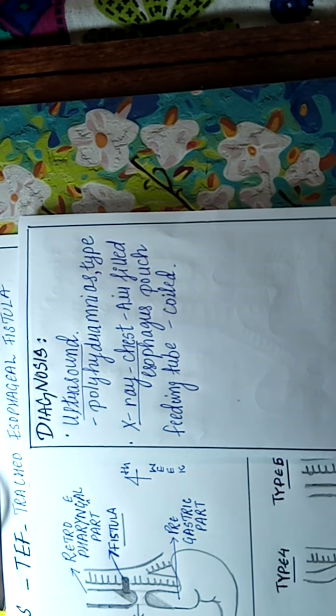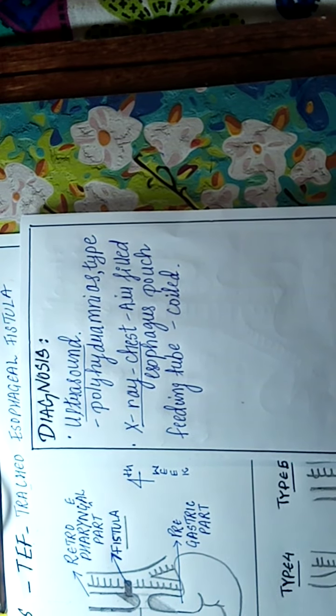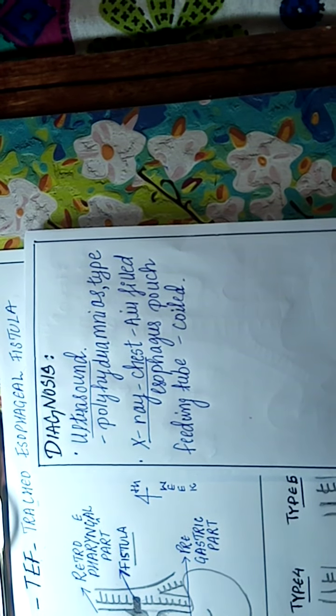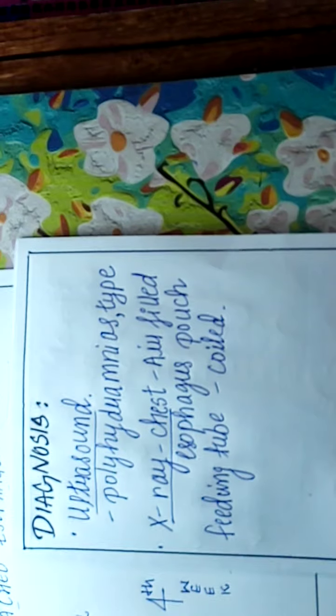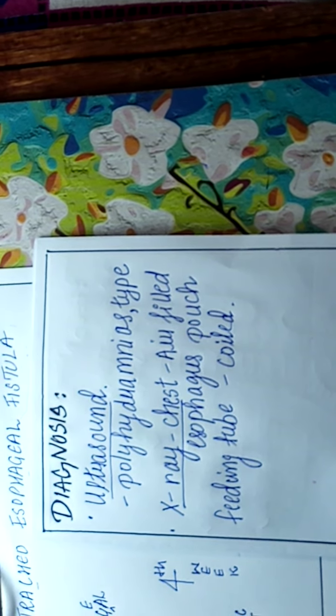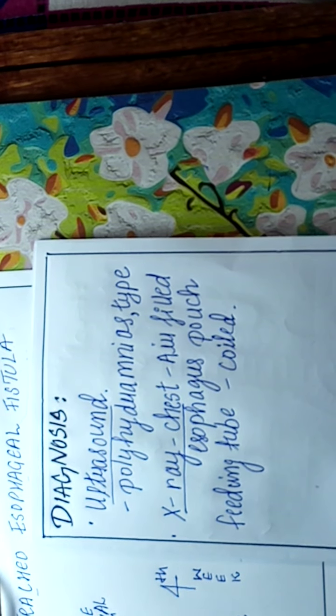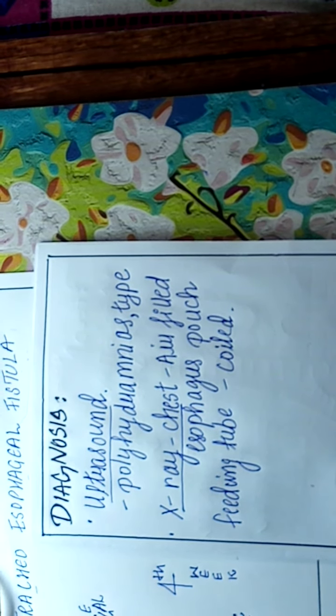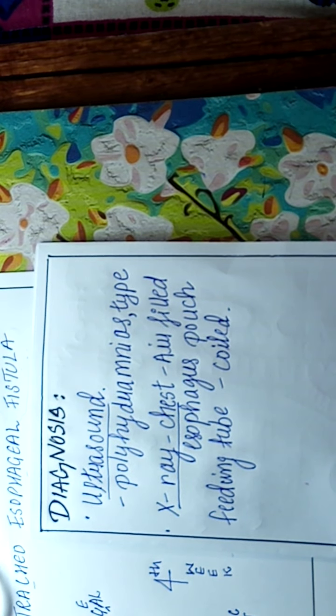In the diagnosis, if we do ultrasound there will be signs of polyhydramnios and we can see the type of TEF in ultrasound. We can also do x-ray. In x-ray of the chest there will be visible air-filled esophagus pouch.